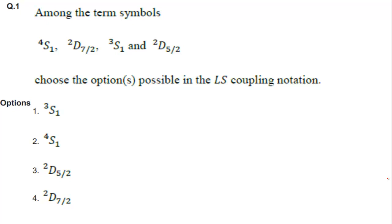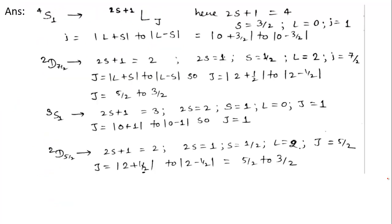The question says: among the term symbols 4S1, 2D7/2, 3S1, and 2D5/2, choose the options possible in the LS coupling notation. This is an MSQ type question, meaning one or more options can be correct. We will check each term symbol one by one according to the L, S, and J values and compare which is possible. The term notation formula is 2S+1 L_J.